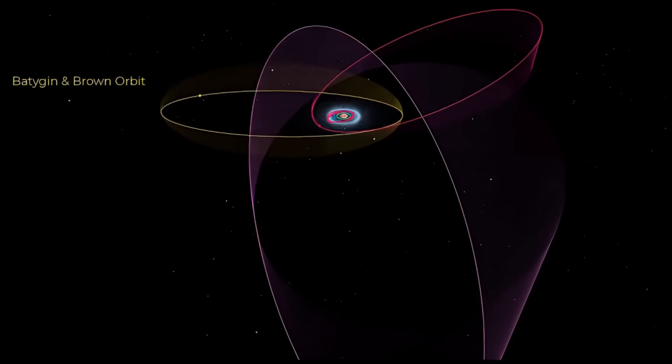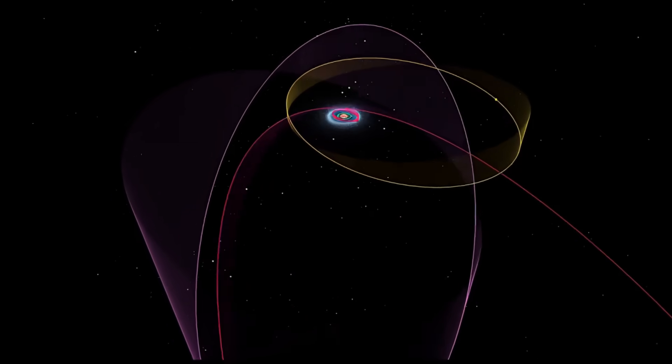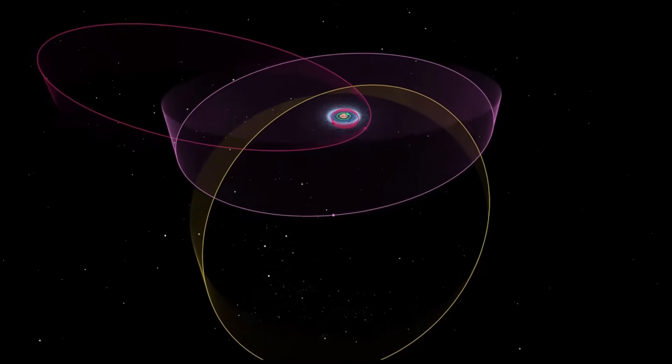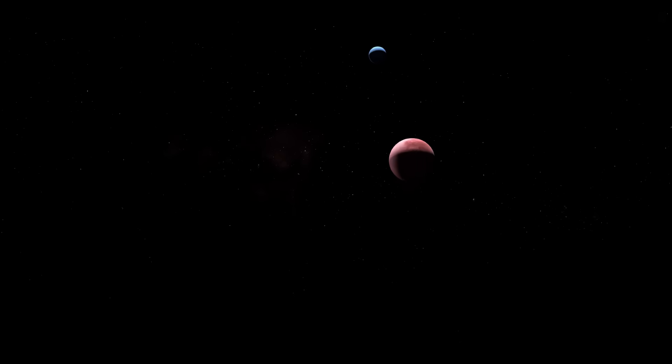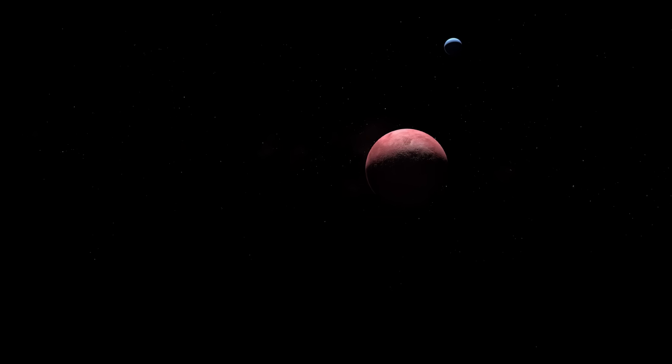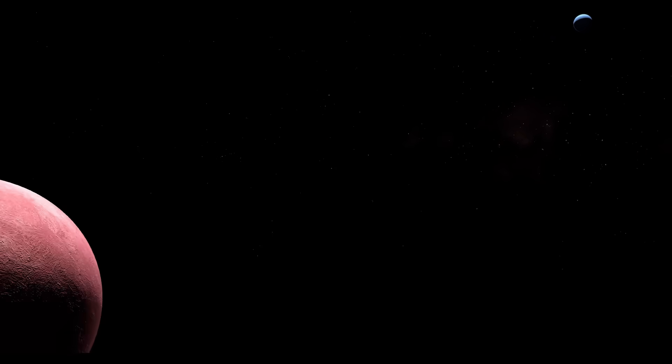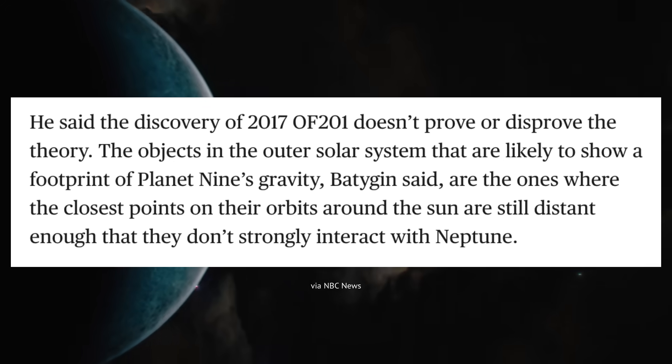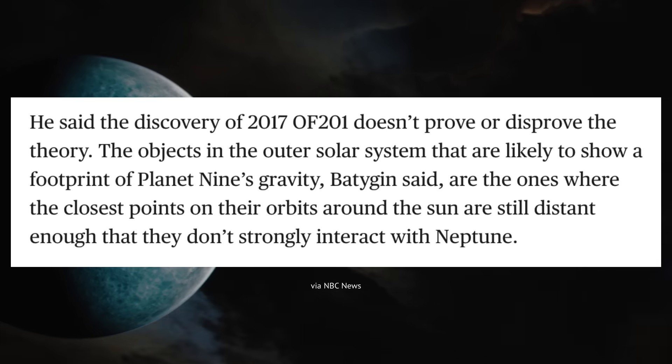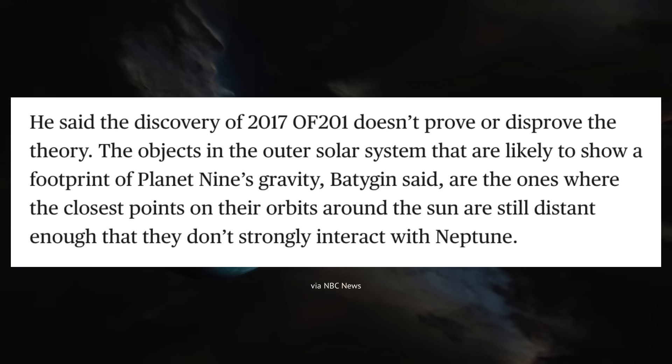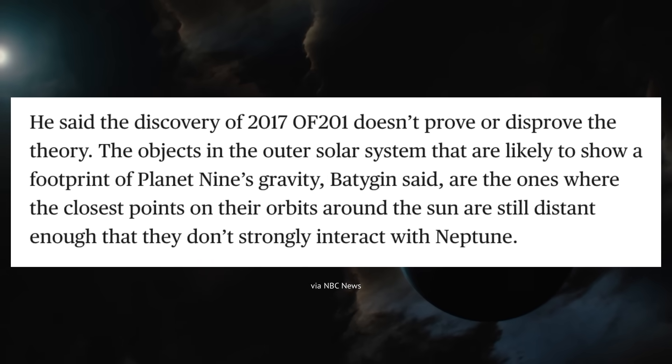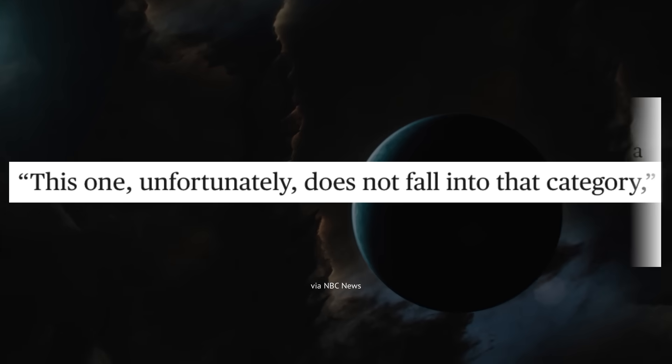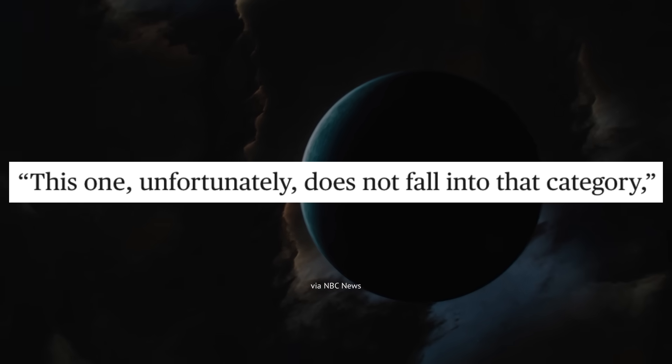Here's how. The simulations only used one specific location for Planet Nine, but not all scientists agree on where the hypothetical planet lurks. In fact, Konstantin Batygin, one of the scientists who first proposed the existence of Planet Nine, says that the discovery of 2017 OF 201 doesn't prove or disprove anything. Speaking with NBC News, he said, the objects in the outer solar system that are likely to show a footprint of Planet Nine's gravity are the ones where the closest points on their orbits around the sun are still distant enough that they don't strongly interact with Neptune. This one, unfortunately, does not fall into that category because its orbit is very chaotic.